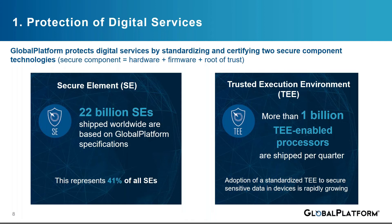A trusted execution environment, or TEE, is a secure area of the main processor in a smartphone or any connected device. It ensures that sensitive data is stored, processed, and protected in an isolated, trusted environment. The TEE's ability to offer isolated, safe execution of authorized security software, known as trusted applications, enables it to provide end-to-end security by enforcing protected execution of authenticated code, confidentiality, authenticity, privacy, system integrity, and data access rights. The TEE also offers high processing speeds and a large amount of accessible memory, and more than 1 billion TEE-enabled processors are shipped per quarter.